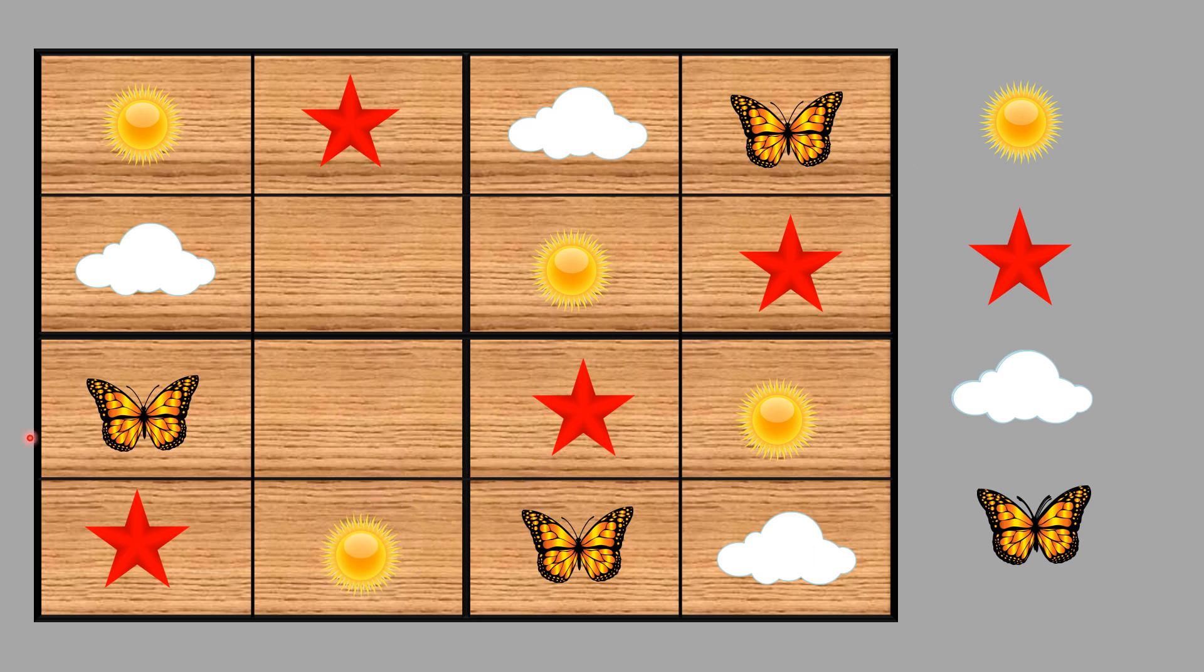Now let's see this row - butterfly, star, and sun. So the missing is cloud. That's correct. And the last one, we can go by this way or this way. It will have the missing as butterfly. So here we go, we completed our game.